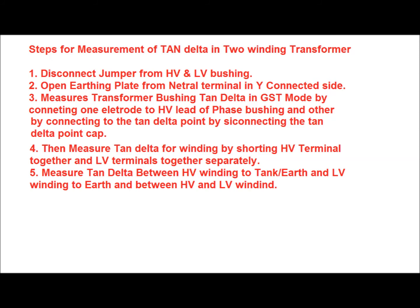Then we have to measure the tan delta for the winding by shorting all the HV terminals together and LV terminals together separately. Then we measure tan delta for the winding: HV to earth, LV to earth, and between HV to LV.